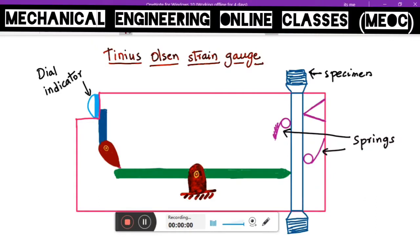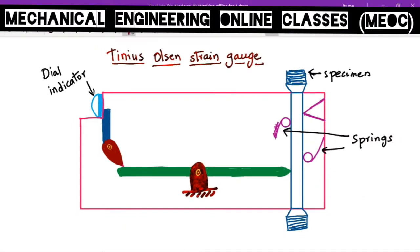Coming to the next type of strain gauge which comes under compound magnification system is the Tinius Olsen strain gauge.